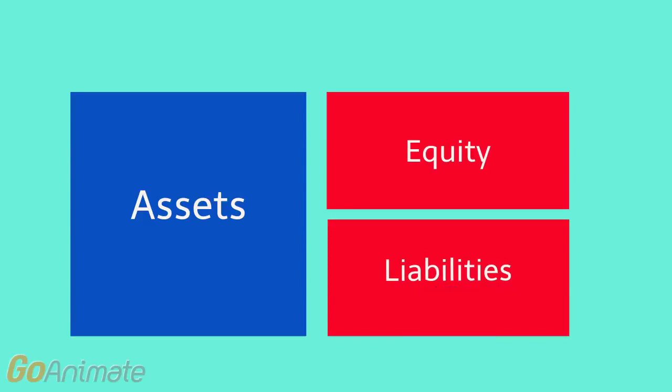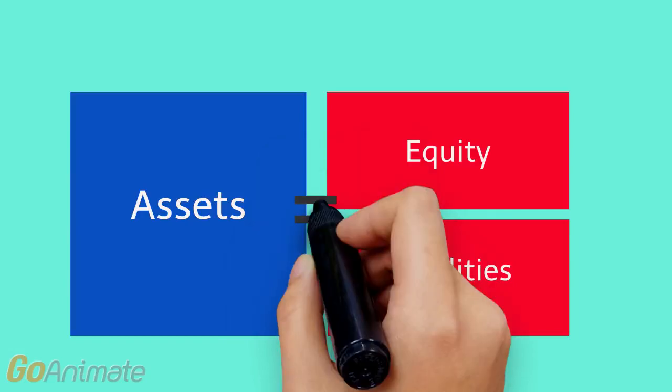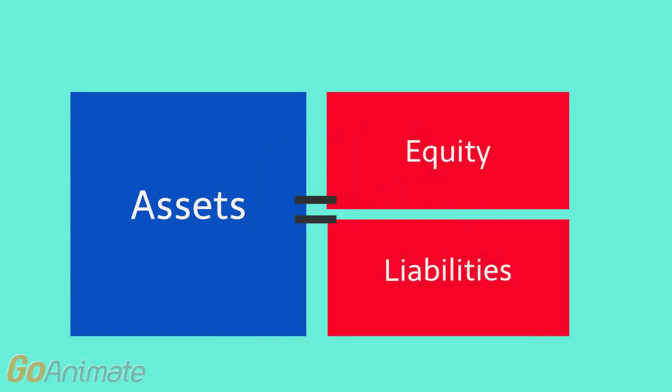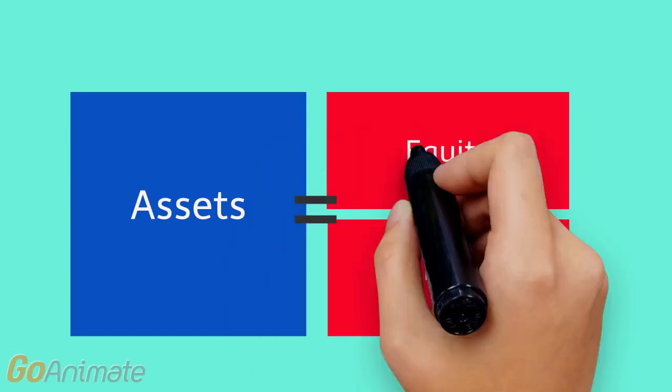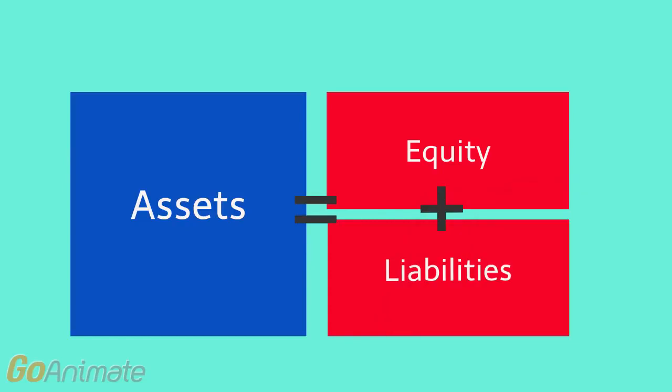In business we have to get our assets from somewhere, either through equity or from liabilities. So we can say that assets — the blue box — must always be equal to the two red boxes: equity plus liabilities.